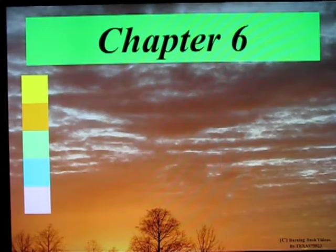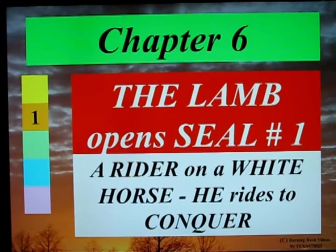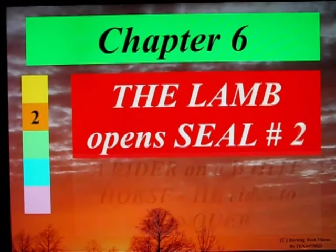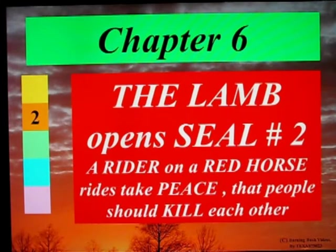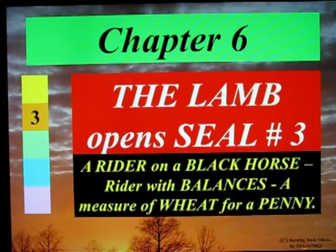Chapter 6: The Lamb opens the first seal — a rider on a white horse who rides to conquer. The Lamb opens seal number 2 — a rider on a red horse who rides and takes peace, that people should kill each other. The Lamb opens seal number 3, and a rider on a black horse with balances calls out a measure of wheat for a penny.